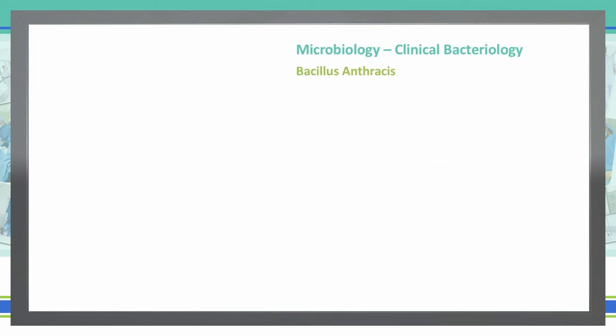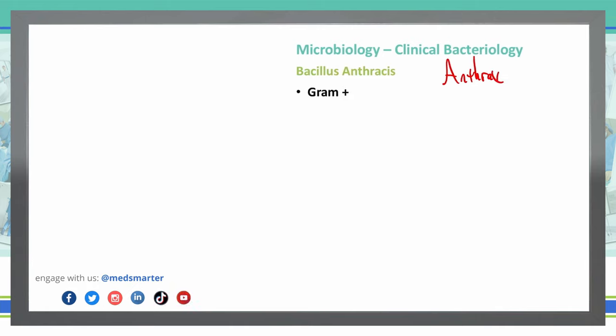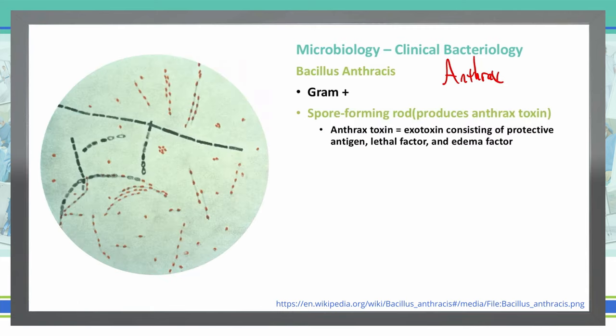Moving on, we'll discuss Bacillus anthracis. The most common thing you've heard of regarding Bacillus anthracis is anthrax. It is a gram-positive, spore-forming rod. The spore-forming rod is where we get the anthrax toxin, which is an exotoxin — meaning it is released from the bacteria — and it consists of a protective antigen, a lethal factor, and an edema factor.